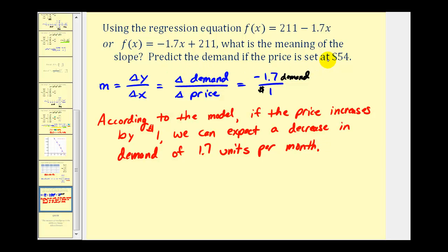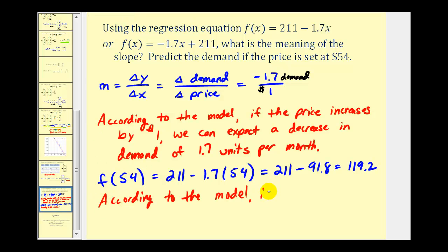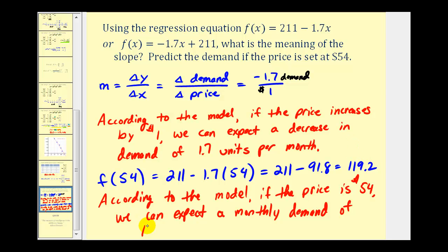We're also asked to predict the demand if the price is set at $54. Since x represents the price in dollars, we evaluate f(54) = 211 − 1.7 × 54 = 211 − 91.8 = 119.2. According to the model, if the price is $54, we can expect a monthly demand of approximately 119 units.